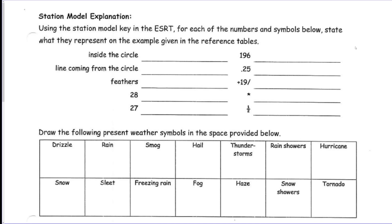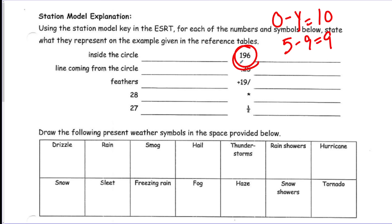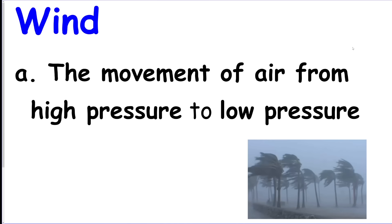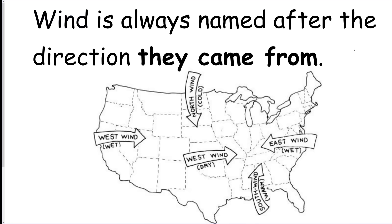For station models, the most important thing is knowing how to convert air pressure. If the reading is between 0 and 4, put a 10 in front; if it's between 5 and 9, put a 9 in front. Then put a decimal between the last two digits. The reference table explains how to do the whole station model.